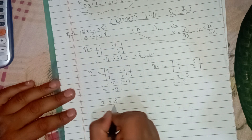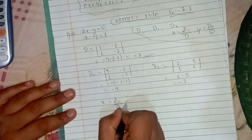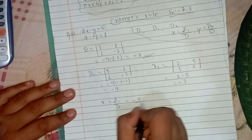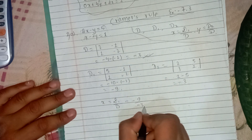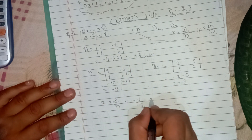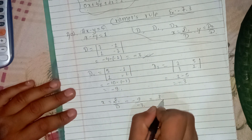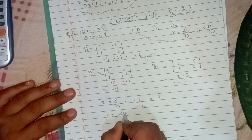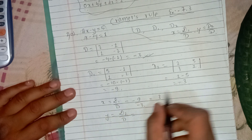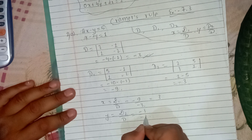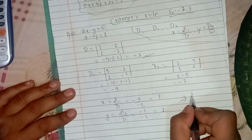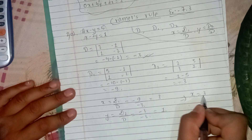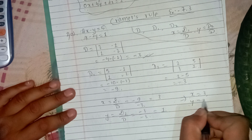Using the formula, x equals D1 by D. D1 is minus 9 and D is minus 3, so x equals 3. For y, y equals D2 by D, which gives y equals 1.